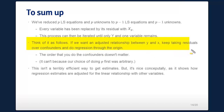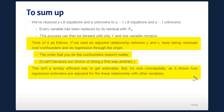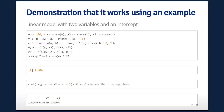In other words, if we want an adjusted relationship between Y and X, keep taking residuals over confounders for both and do regression through the origin. The order doesn't matter — removing the linear association of A then B is the same as removing B then A — because our choice of doing p first was arbitrary. This isn't a terribly efficient way to get estimates; it just shows how to do it without linear algebra. But let's actually do it in R just to prove to ourselves that it's the same.